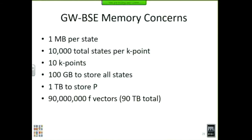In terms of memory concerns, a typical larger problem looks like this: about 1 megabyte per state with 10,000 total states per k-point, where 1,000 would be occupied and 9,000 unoccupied. With around 10 k-points, that's 100 gigabytes to store all the states — which is reasonable. However, P itself requires a terabyte of space. The F vectors number around 90 million (1,000 × 9,000 pairs × 10 k-points), which is around 90 terabytes of memory we have to store at some point in time.